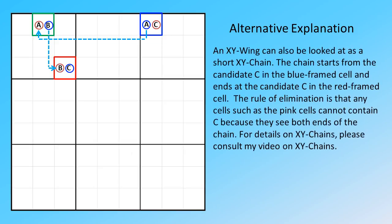An XY-Wing can also be looked at as a short XY-chain. The chain starts from the candidate C in the blue-framed cell and ends at the candidate C in the red-framed cell. The rule of elimination is that any cell such as the pink cells cannot contain C because they see both ends of the chain. For details on XY-chains, please consult my video on XY-chains.